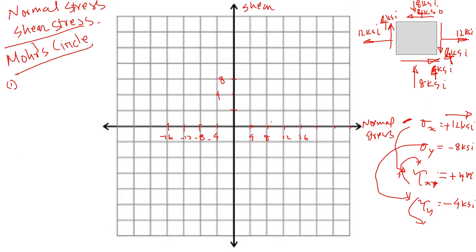For the x face, the normal stress is 12 KSI, and the shear stress is 4 KSI clockwise — which is positive — so that point is at (12, 4). For the y face, the compression stress is negative 8 KSI, so it goes to the left. The shear stress on the y face is counterclockwise, which is negative, so that point is at (-8, -4).